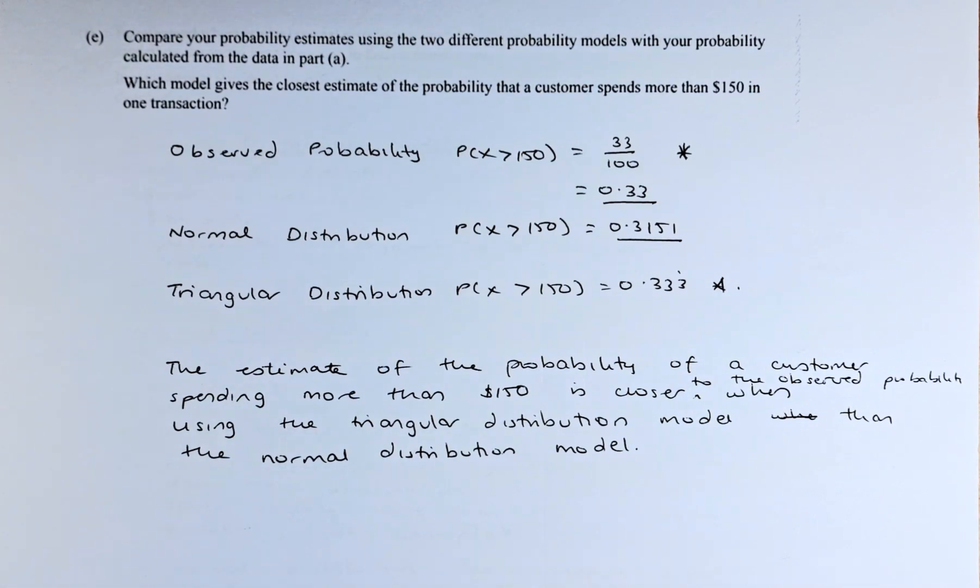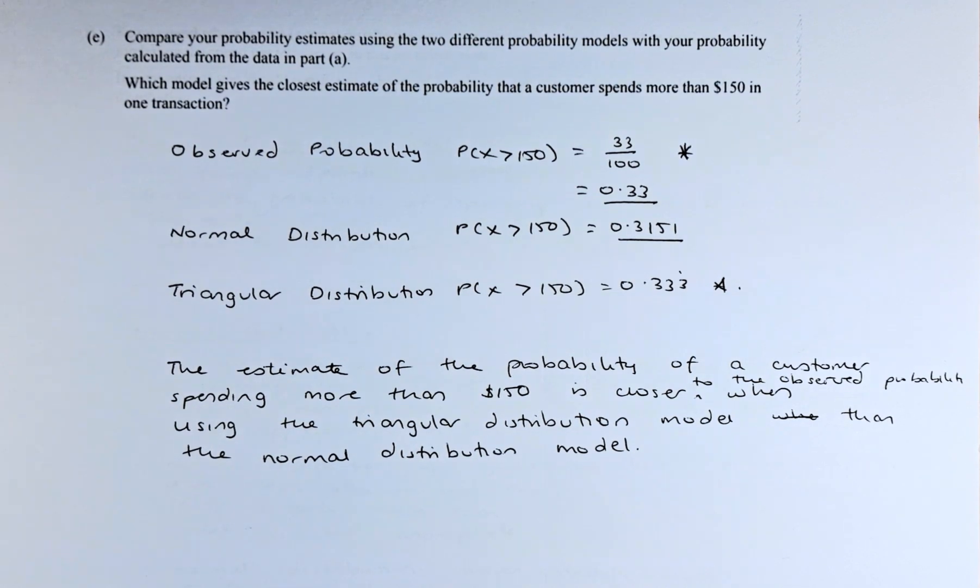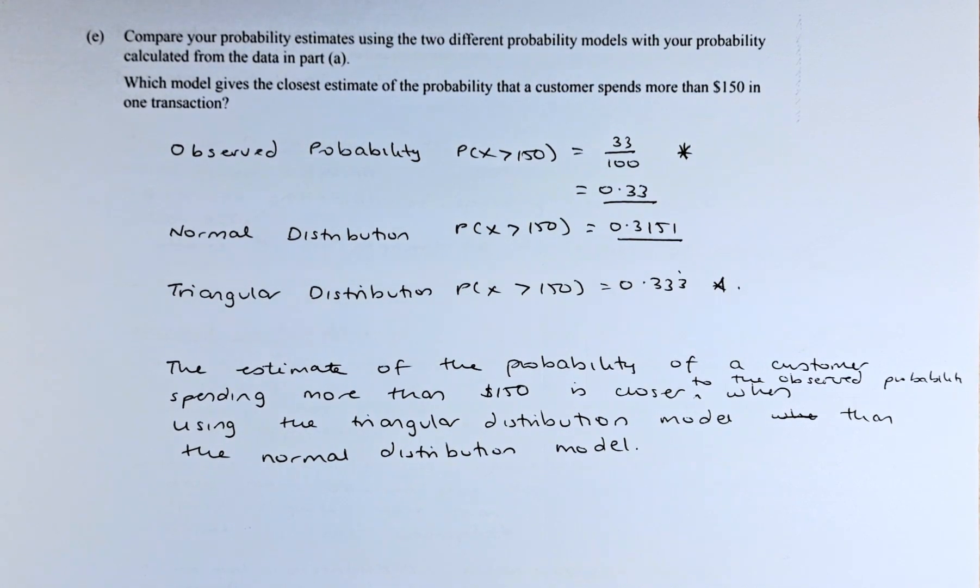Good day! In this video, we are going to try to do the last two questions of the 2022 NCA Level 3 Statistics paper. It's called probability distribution. Today, we're going to look at question 3E and 3F. So now let's read the question.